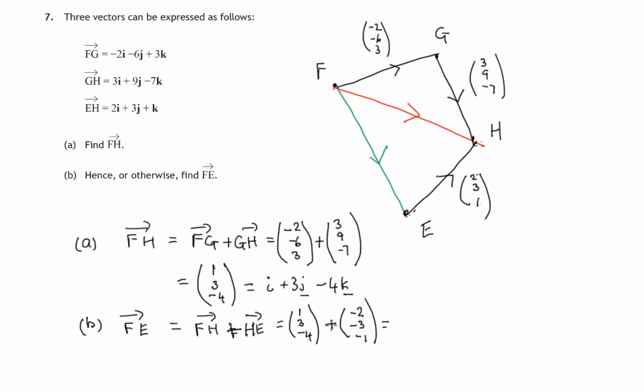So let's add the corresponding components again. 1 + (-2) is -1. 3 + (-3) is 0. And -4 + (-1) is -5. And in terms of i, j, and k, that's -i + 0j - 5k, or just -i - 5k.